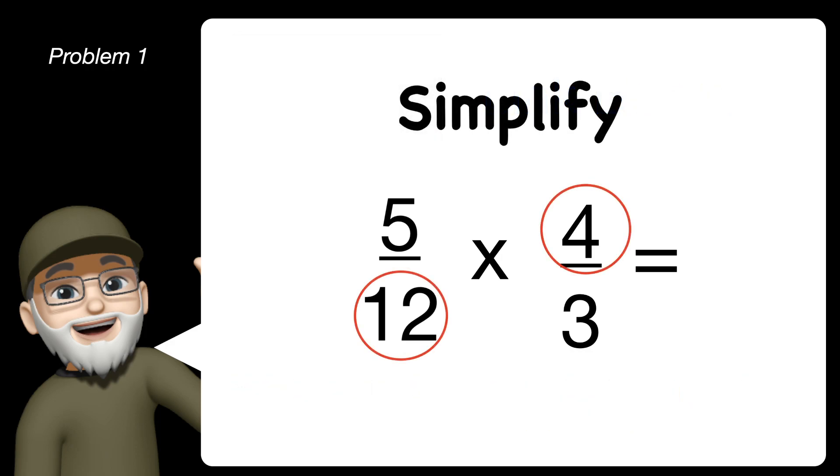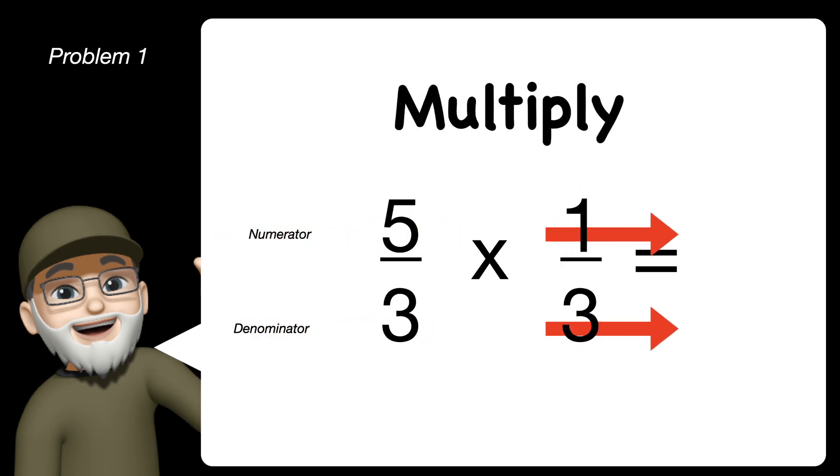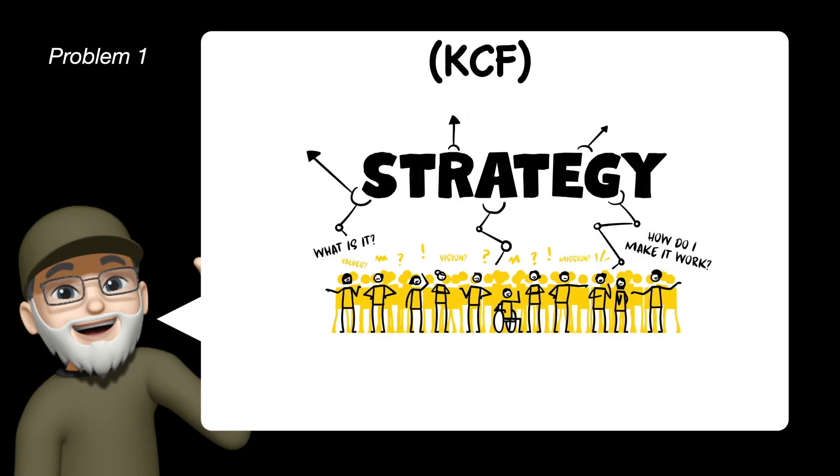We then simplify. In this case, the 12 and 4 are both divisible by 4, so we can simplify both of those fractions. We simplify and then simply multiply straight across. 5 times 1 on top, 3 times 3 is 9.